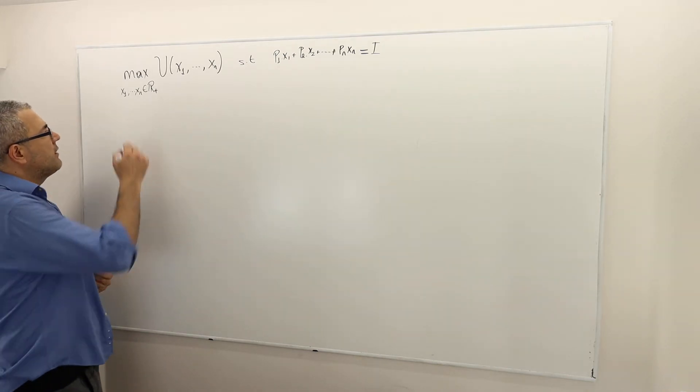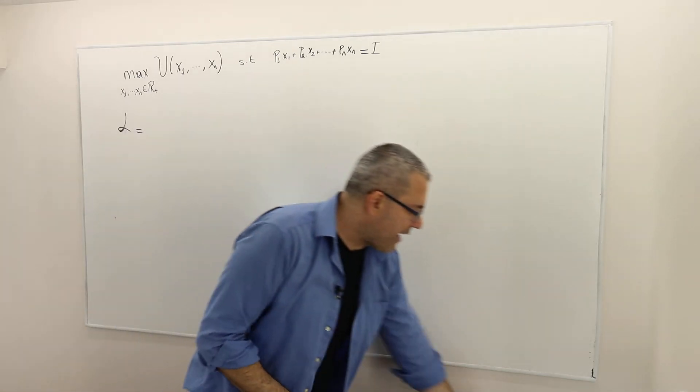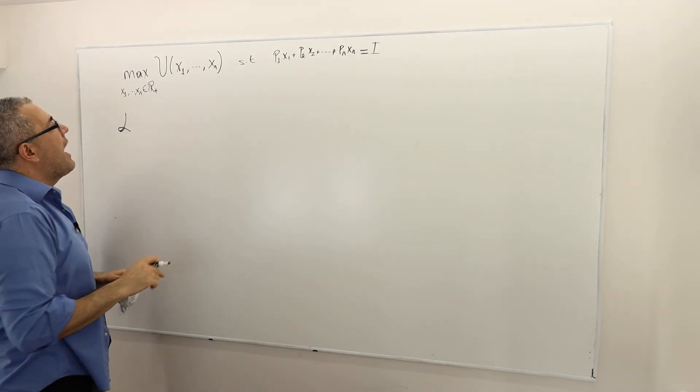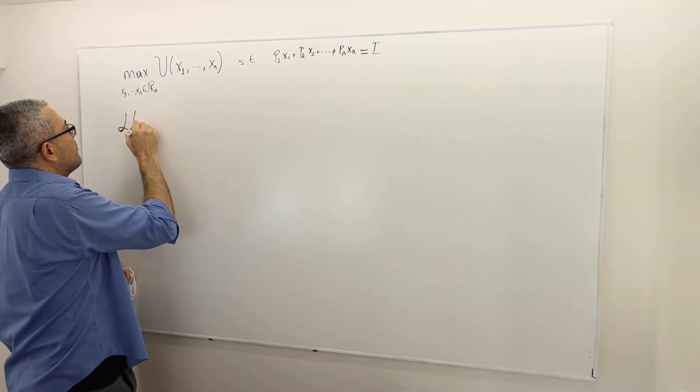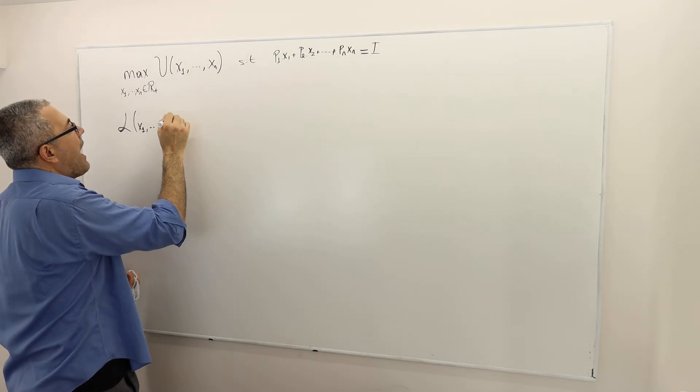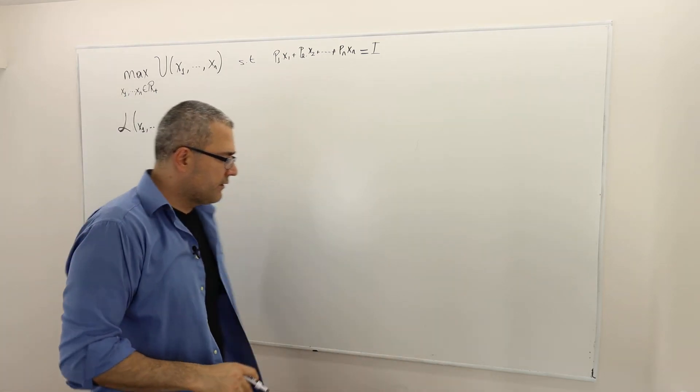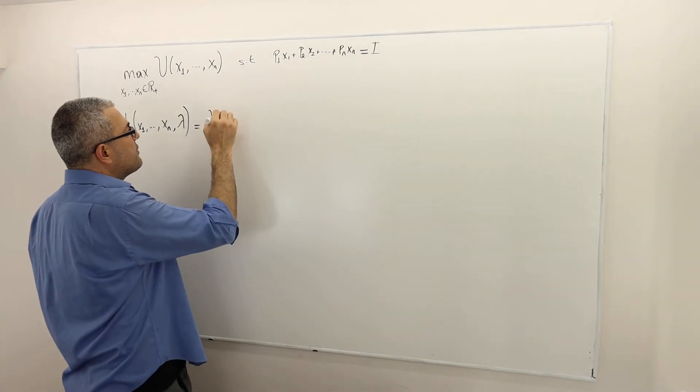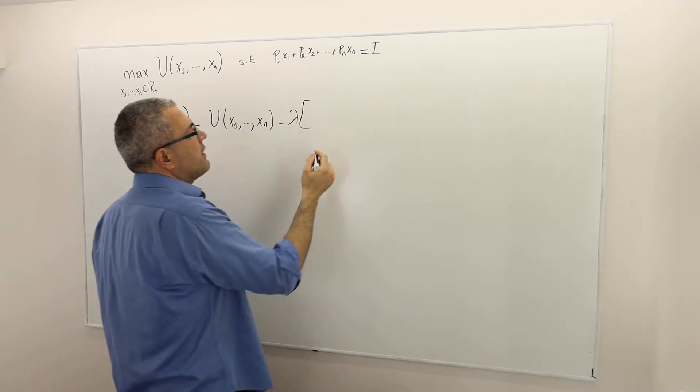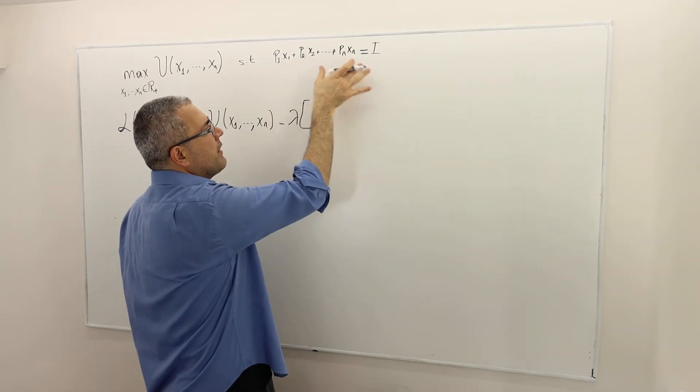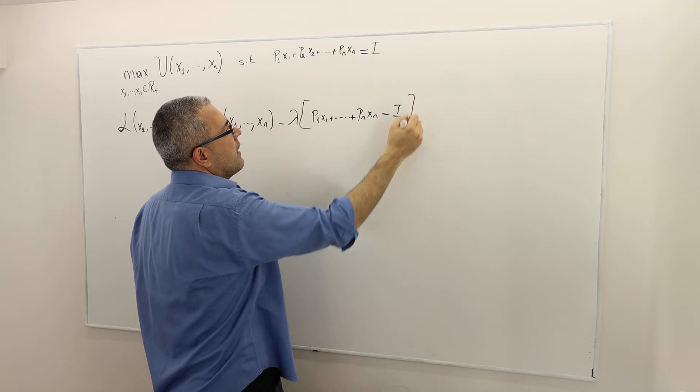So how do we write the Lagrangian? The approach of the Lagrangian is very simple. If you remember, if you have n variables, you will have n plus 1 variables because I have 1 constraint. So therefore, my Lagrangian is going to depend on x1 all the way up to xn and also the Lagrange multiplier denoted by lambda. The Lagrangian is written simply by your objective function, U(x1, ..., xn), minus lambda times your constraint. Here the constraint is written basically by your expenditure minus income, so it's p1·x1 all the way up to pn·xn minus income.